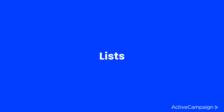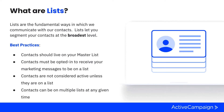Before we go into the platform, let's break down and understand lists. Lists are the fundamental ways in which you're communicating with your contacts. If you're trying to break down all the different ways you can communicate with contacts, think about the broadest groups of your contacts — how are you talking to your different groups? Lists really are the top-tier form of customer or contact segmentation.